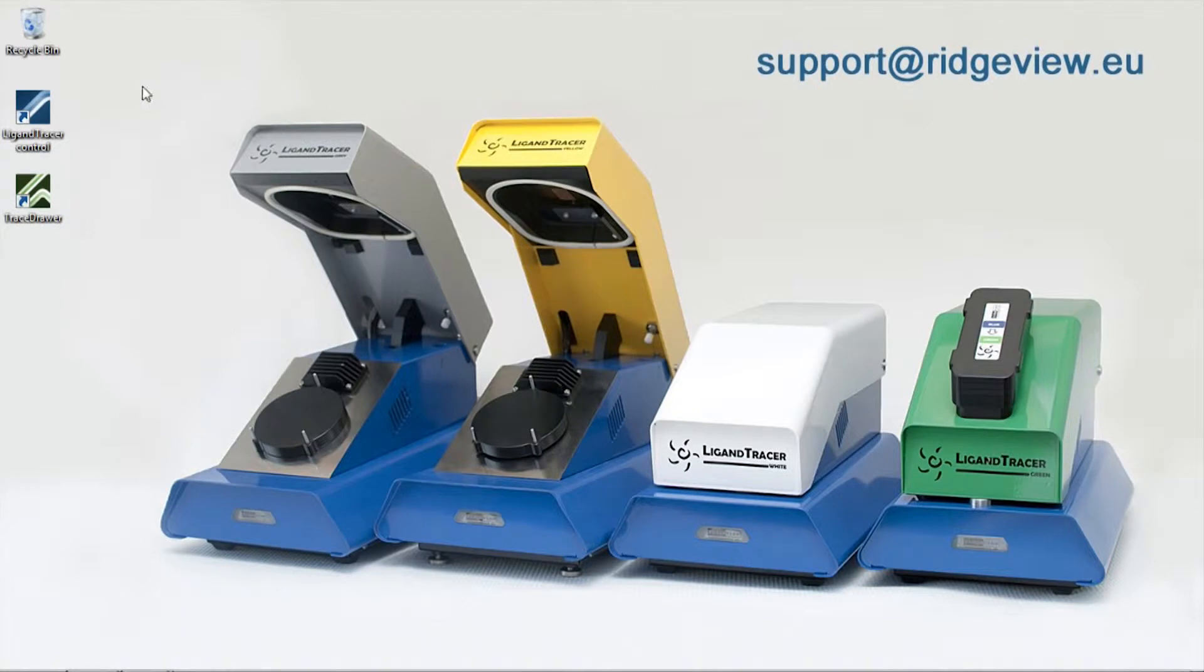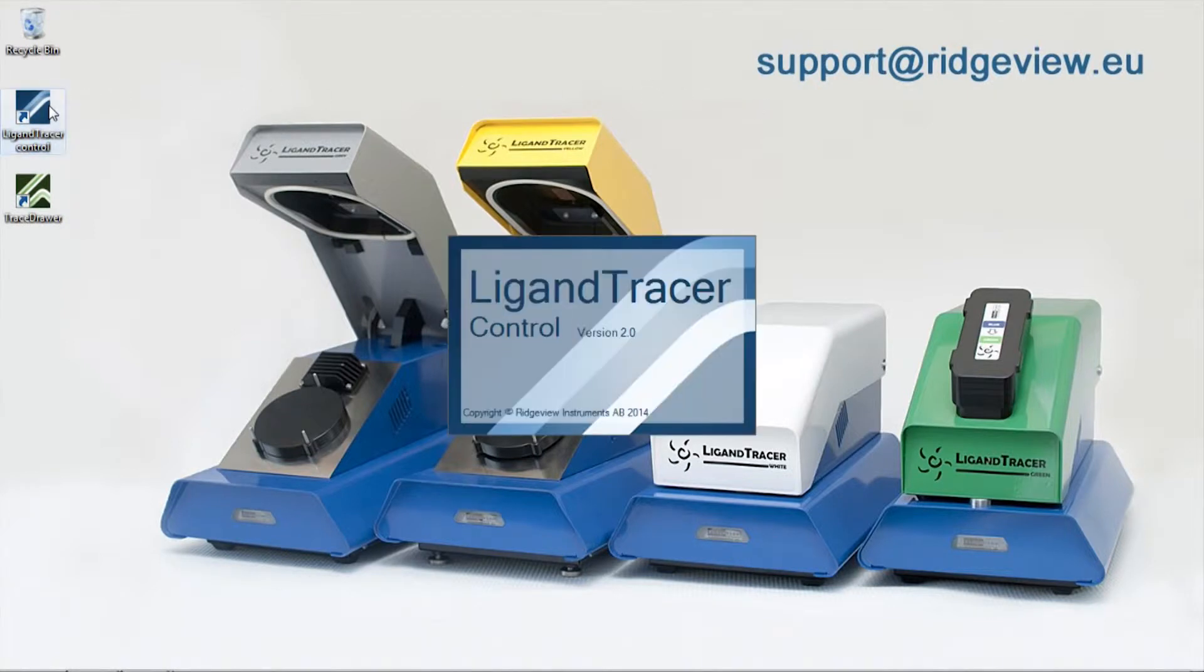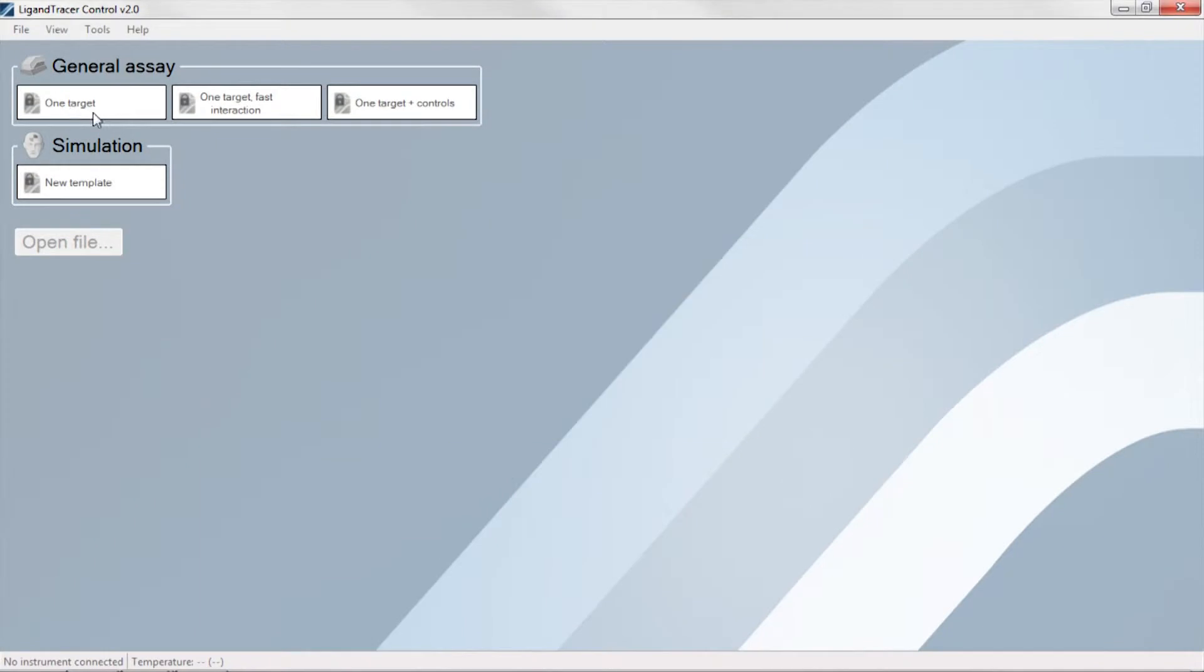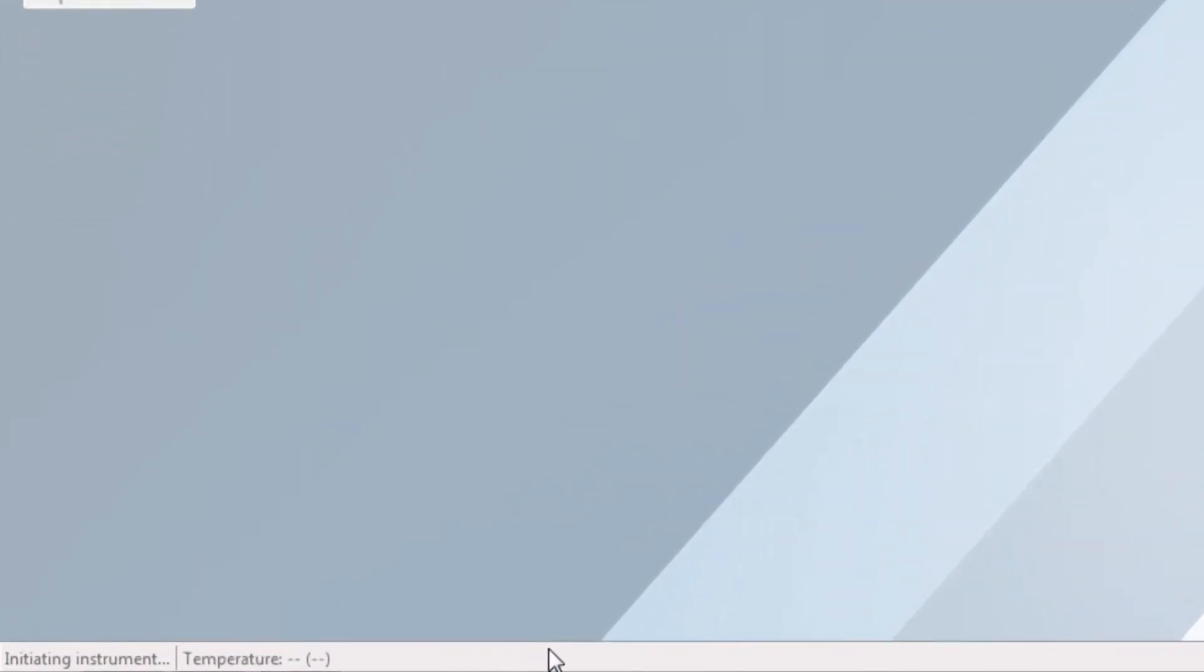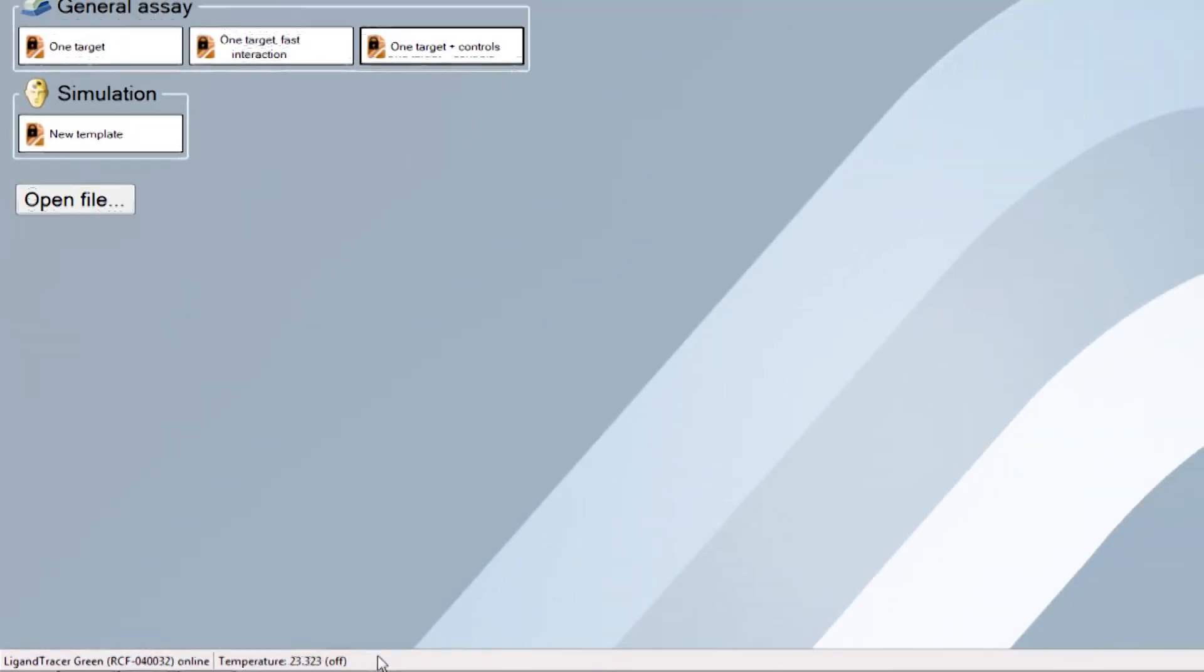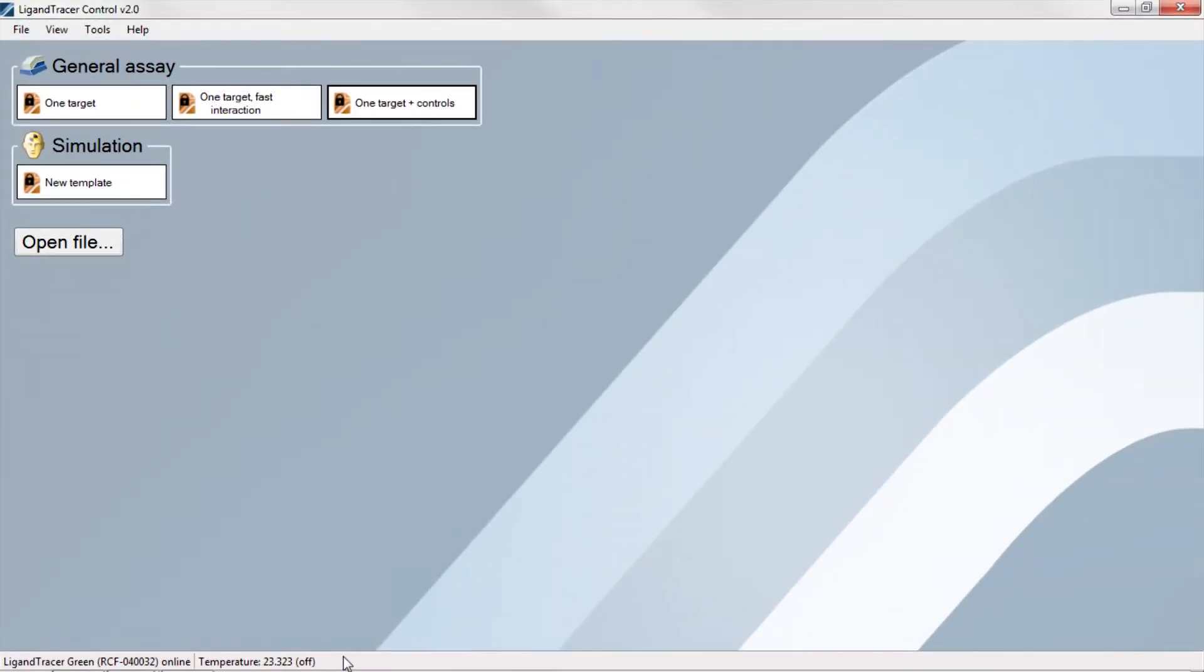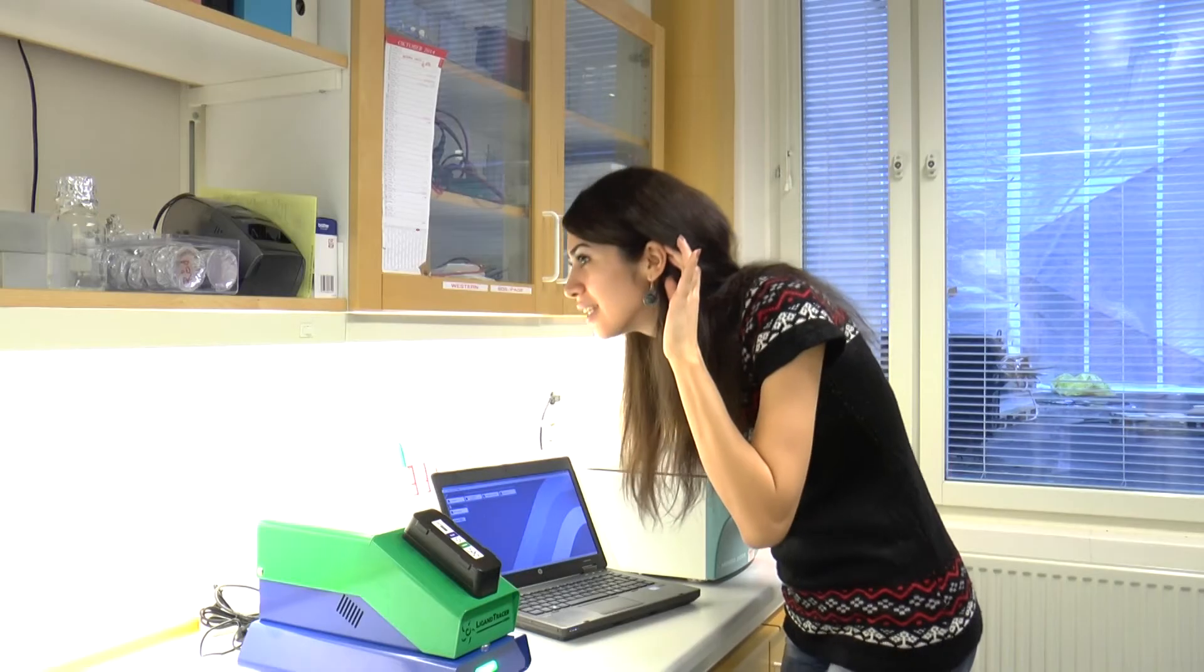Click the LigandTracer Control icon on the desktop of the computer. A connection is established between the instrument and the computer within a few seconds, as presented in the lower left corner of the screen. You may simultaneously hear a low sound from the instrument, which is the cell dish holder rotating back to its home position.